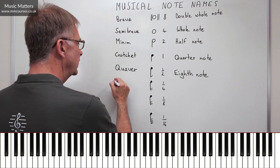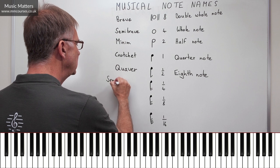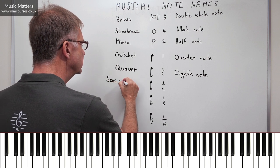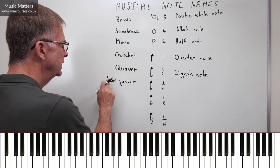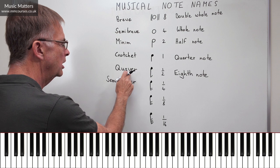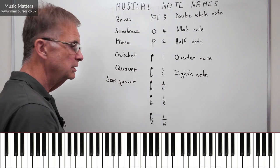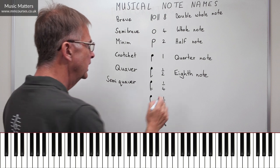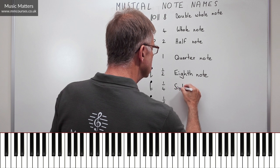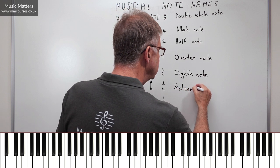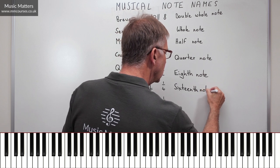This one in our system, in the UK, is called a semi-quaver. Well, that also is logical to some extent, isn't it? If this one's a quaver, semi-quaver is half of a quaver. So half of the half is a quarter. It's all about maths, isn't it? And you can see that in the US system, this thing is now going to be called a sixteenth note.